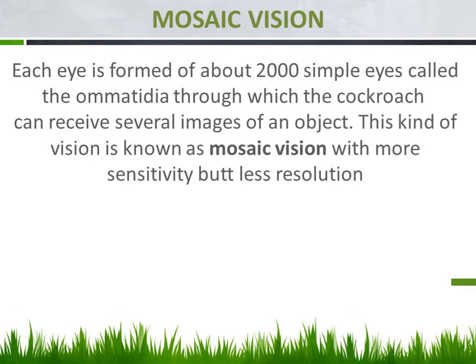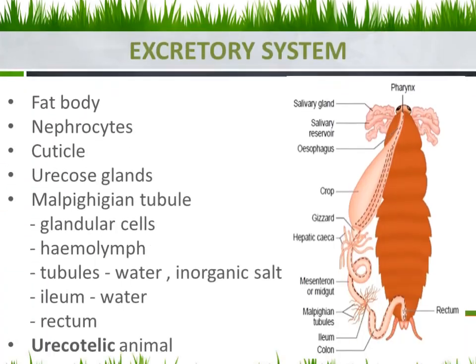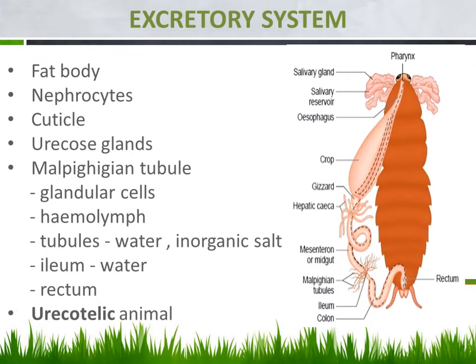Mosaic vision will be asked as a 3-mark, 2-mark, or even 1-mark question. The next system is the excretory system. Excretion is the elimination of nitrogenous waste produced by metabolic processes, and this is performed by a group of organs called the excretory system.